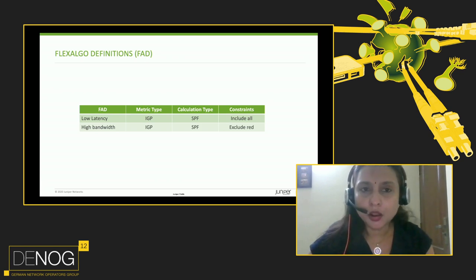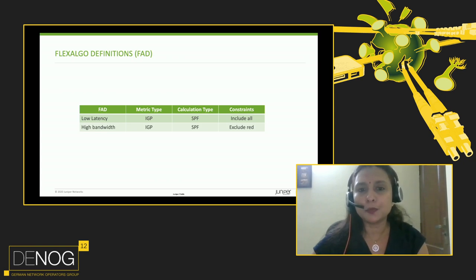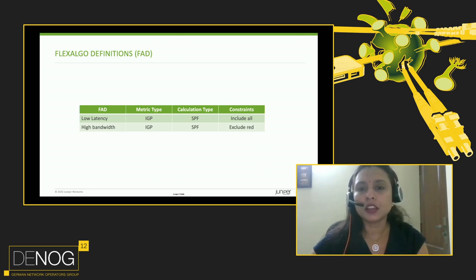Let us see how to define flex algo definitions to satisfy this use case. We have two flex algos: one is a low latency flex algo, and another is a high bandwidth flex algo. For the low latency FAD, the metric type is IGP metric, calculation type is SPF, and the constraint is include all links. The second FAD is a high bandwidth FAD, which also has metric type IGP and calculation type SPF, but it has a constraint to exclude red links.